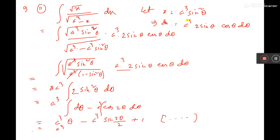Now put the value of theta. It is x by a cube, root over of x by a cube, sine inverse. So it will be sine inverse of root over of x by a cube, minus a cube by 2, sine 2 into sine inverse of root over of x by a cube, plus c. This is the answer.